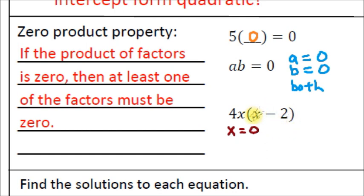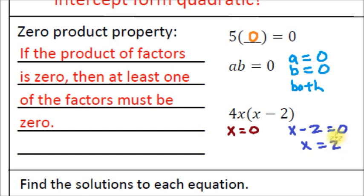There's another answer. If the binomial (x minus 2) is equal to zero, then 4 times anything times that zero also gives us zero. So the other value of x that makes this equal to zero is whatever value makes x minus 2 equal zero. Solving: x minus 2 equals zero, add 2 to both sides, x equals 2. If x is 2, then 2 minus 2 is zero, and 4 times 2 times zero gives us zero.